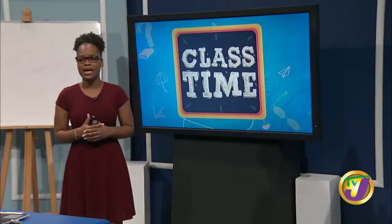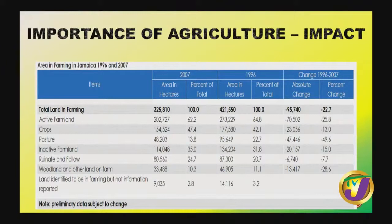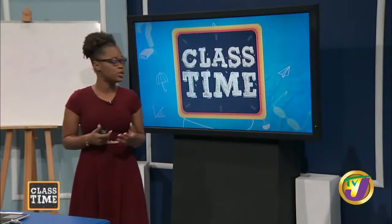Looking at statistics specific to Jamaica: Jamaica has about 202,000 or more hectares of active farmland, as recorded in 2007. Looking at the absolute change between 1996 and 2007, there is a decline in arable farming — the cultivation of crops. With different economic activities now generating income, people are engaging in those, so farming is not seen as the primary economic activity that others want to pursue.